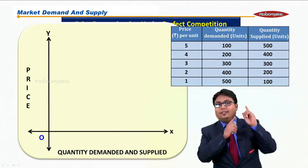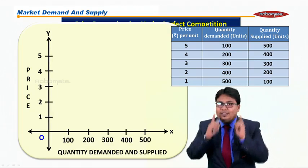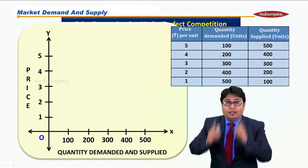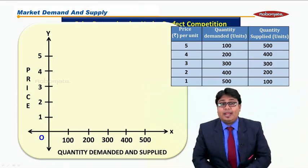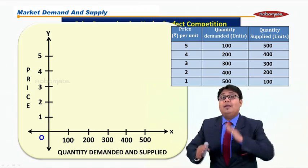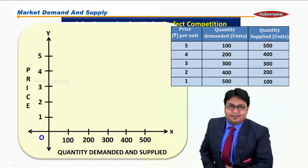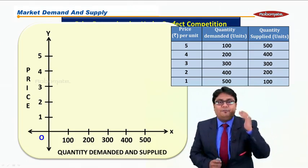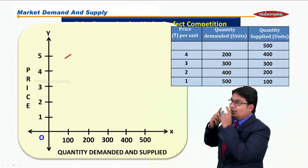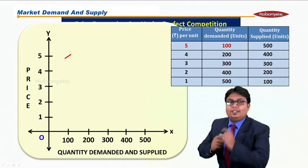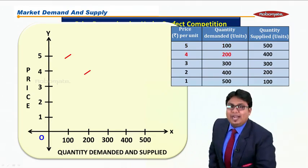Let us start plotting this particular schedule on the graph. First, demand. The relationship is inverse—price is falling, quantity demanded is rising. The very first point is when price is 5, demand is 100. As you can see, there is a red mark. Next one is when price is 4, demand is 200.